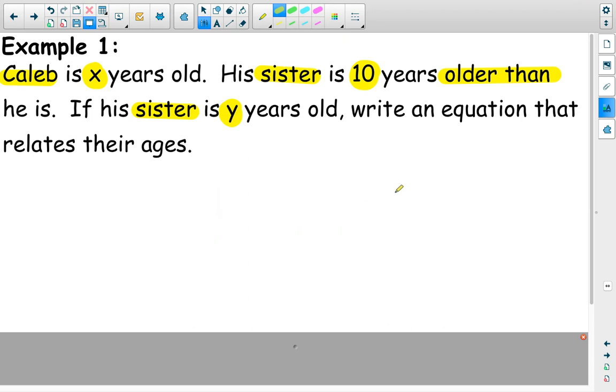Write an equation that relates their ages. So this is the second part of our objective now is that we are relating the independent and the dependent variable. Well, if Caleb is x years old, his sister is 10 years older. So in order for her to be 10 years older, you must have to add on 10 years.